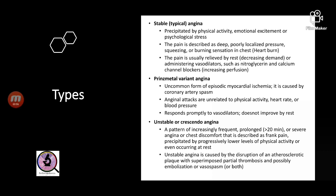Angina is of three types: stable angina, Prinzmetal variant angina, and unstable or crescendo angina. Stable angina occurs in the background of narrowing of the coronary arteries due to atherosclerosis, but the pain is precipitated by physical activity, emotions, or psychological stress.